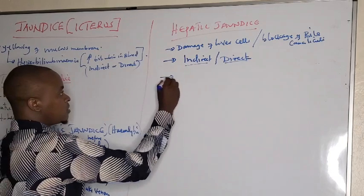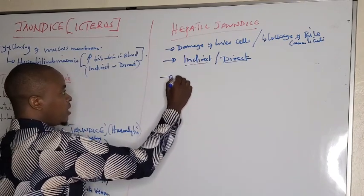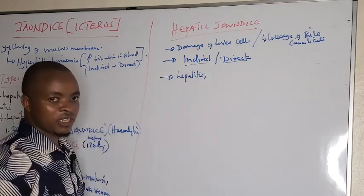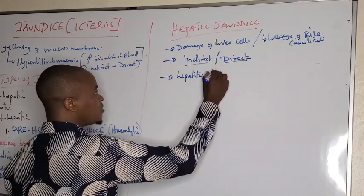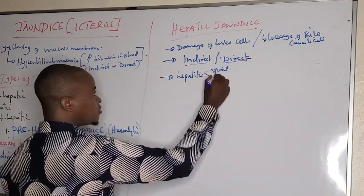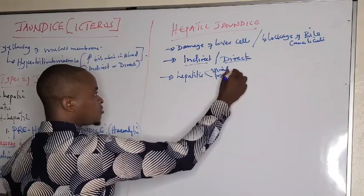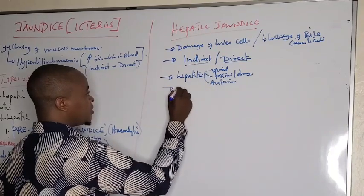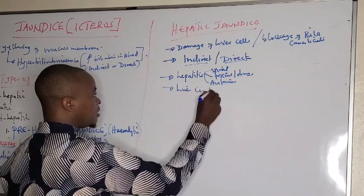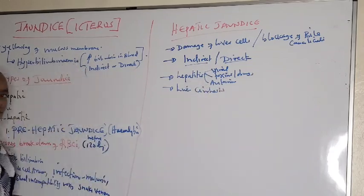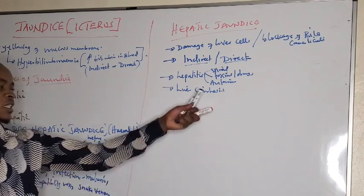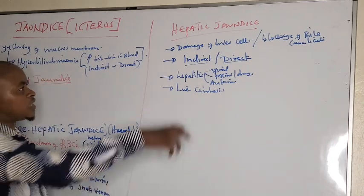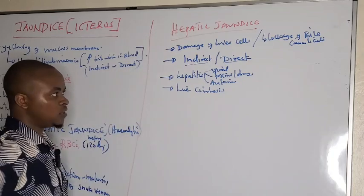The causes of indirect hyperbilirubinemia in hepatic jaundice include liver hepatitis — that is inflammation of the liver cells — which can be due to viral infection, toxins, drugs, or autoimmune causes. We also see it in liver cirrhosis, which is scarring or scar formation of the liver cells seen in chronic alcoholic hepatitis. Anything that causes liver damage leads to hepatic jaundice.